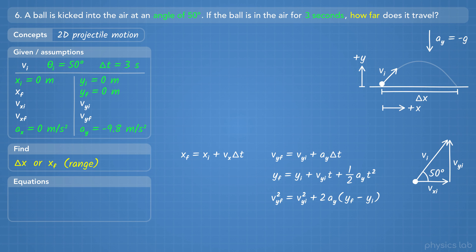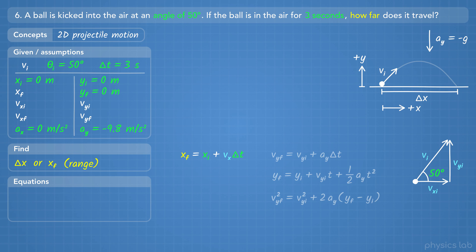The only equation that includes the x position is this one. We know the initial x position and we know the time, but we need to know the x velocity. We're given the angle of the initial velocity vector, so if we could find the magnitude or the y component, then we could use some trig to find the x component. Let's find the initial y velocity and use the tangent relationship to find the x velocity, then use that to find the range.